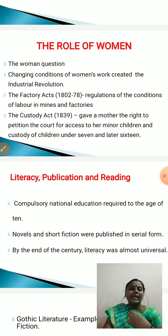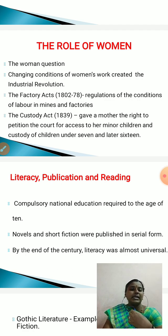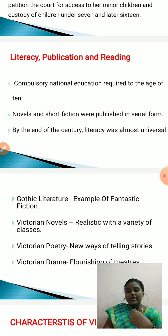Queen Victoria gave importance to education, resulting in literacy, publications, and reading. Queen Victoria compelled universal education for all children, especially those under age 10. Novels and short fictions were published in serial form in order to improve the reading habit of the country. By the end of the century, literacy was almost universal. During this time, Gothic literature flourished — an example of fantastic fiction which combined romance and horror.